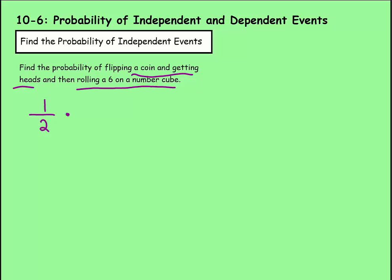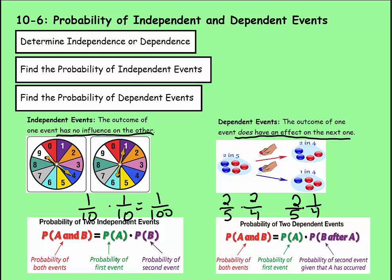And I have to multiply that times the other one, which is rolling a 6. So there's 6 total sides to the dice, and I want to get the 6, only one of them. So I do 1 half times 1 sixth. And that's going to give me an answer of 1 twelfth. So I followed that formula of probability of the first event times the probability of the second event.